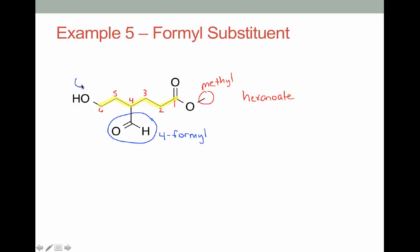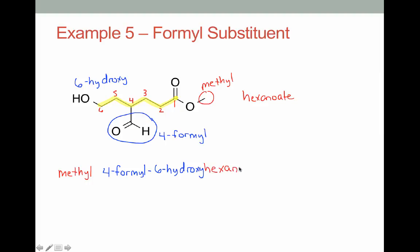On carbon 6 we have a hydroxy substituent. To put the name together: just like with any ester, we start with the R group — methyl. Then we alphabetize our substituents: F comes before H, so we write 4-formyl, then 6-hydroxy, followed by the parent hexanoate. The full name is methyl 4-formyl-6-hydroxyhexanoate. So if the aldehyde is sticking off the parent chain, treat it as a formyl substituent.